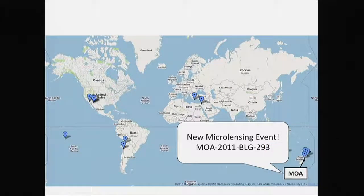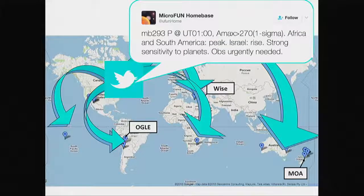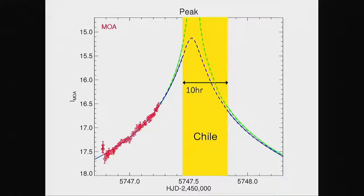In practice, this works as follows. It's the 4th of July, 2011. We get an alert from MOA: new microlensing event MOA 2011 bulge 293. I fit this event and see it's going to peak at very high magnification in less than 12 hours. We send emails and tweets: 'MB293 peak at UT1, A_max greater than 270 at 1 sigma. Africa and South America will see the peak. Israel will see the rise. Strong sensitivity to planets. Observations urgently needed.' Then you plan observations from Chile with a 10-hour window, the sun goes down, and you wait and watch.